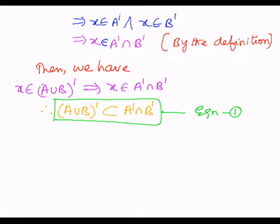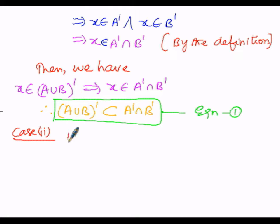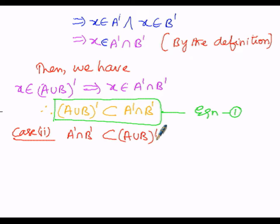Now we are going to prove Case 2. In Case 2, we have to prove that the RHS is a subset of LHS — that is, A' ∩ B' must be a subset of (A ∪ B)'. We are going to prove this by means of element-wise proof. We consider one element x which belongs to the LHS, that is A' ∩ B'.